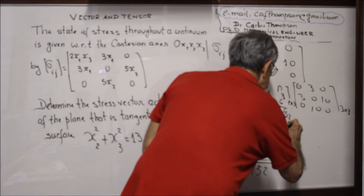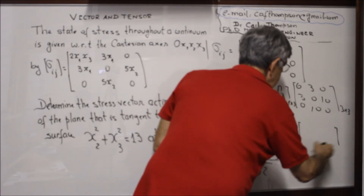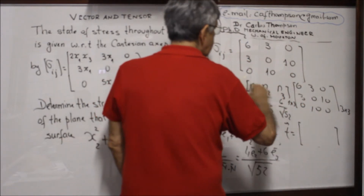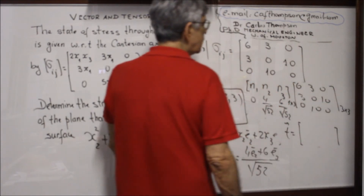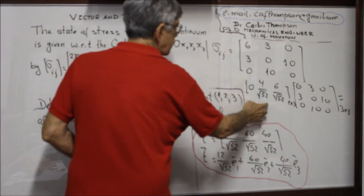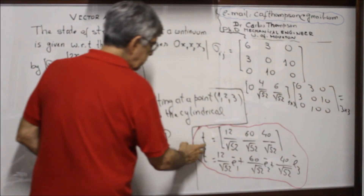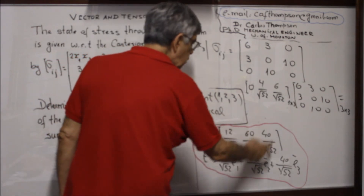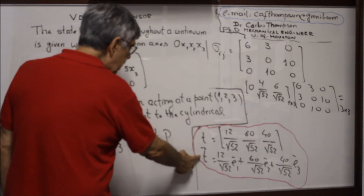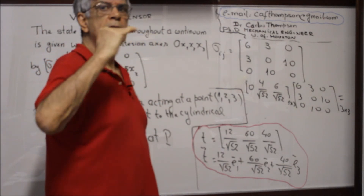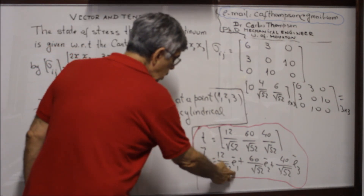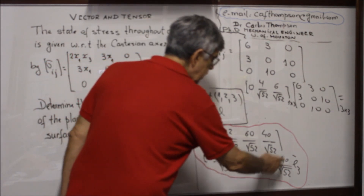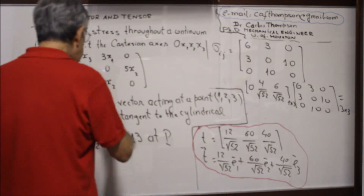So the answer: T is computed by multiplying the unit normal row vector times sigma_ij. The first row times each column gives the components: 12/√52, 60/√52, and 40/√52. So the stress vector — which has units of force divided by area — is T = (12/√52)·E1 + (60/√52)·E2 + (40/√52)·E3. That's the answer to our problem.